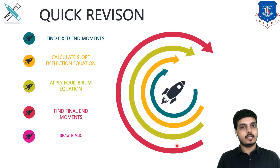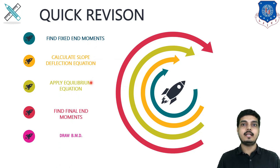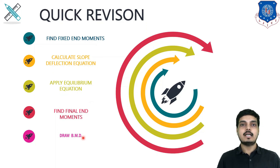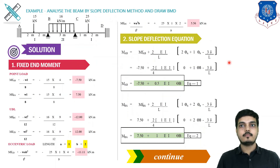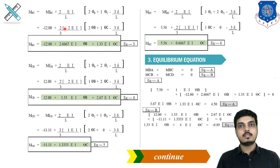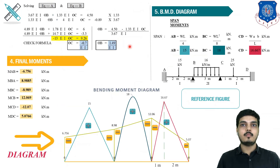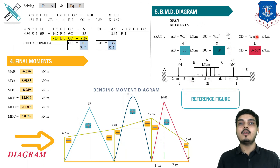Quick revision: Step 1 — find fixed end moments. Step 2 — calculate slope deflection equations. Step 3 — apply equilibrium equations. Step 4 — compute final end moments. Step 5 — draw the bending moment diagram. This is the complete method to solve a 3-span beam problem by the slope deflection method in an exam.